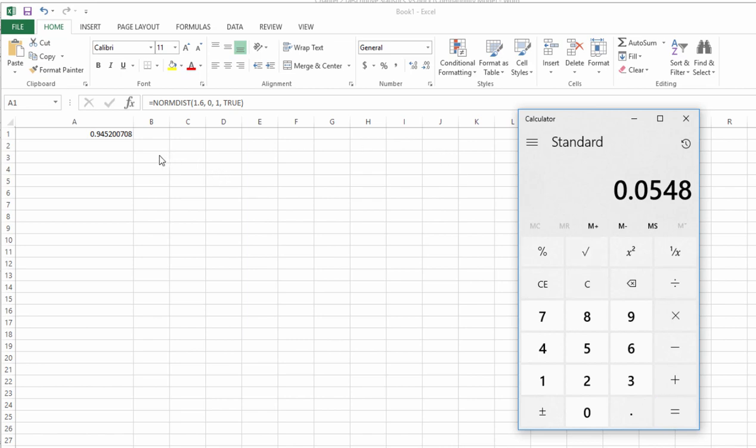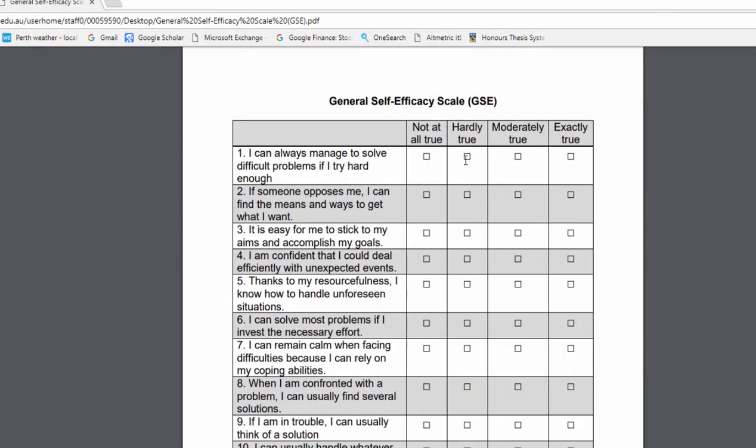So now I need to subtract: 1 minus 0.9452 is equal to 5.48. So only about 5.5 percent of people score as low as 21 on this scale. So it basically means that they're saying hardly true to every single item. So somewhere in this ballpark. The mean is somewhere right in the middle here at 2.9, but people who score more in the 2s, consistently in the 2s, getting a score of 21 is not a very large percentage of people according to the normal distribution.